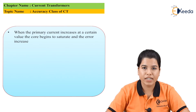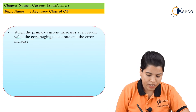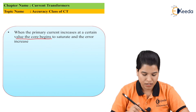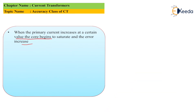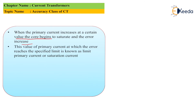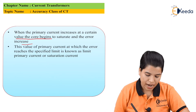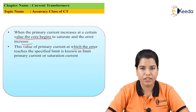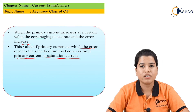When the primary current increases, at a certain value the core begins to saturate and the error will also go on increasing. This value of primary current at which the error reaches a specific limit is known as the limit current or saturation current.